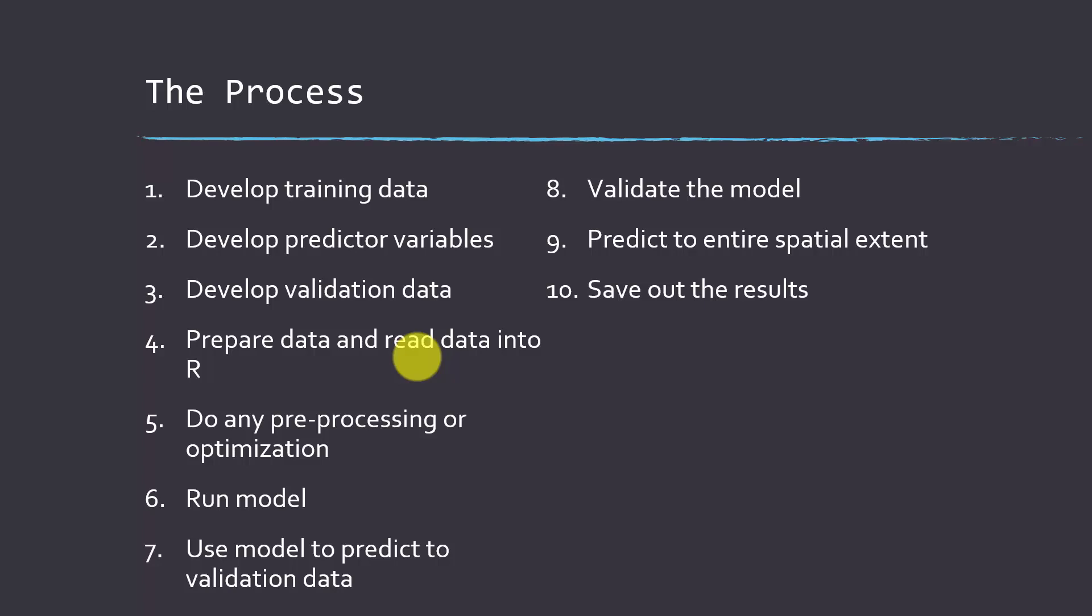Then you can run and create a model, and then you can use that model to predict to some validation data, and then create a validated model. And then you can also predict out to all of your samples, for example, an entire spatial extent, like every polygon or every point or every pixel, whatever your unit is. And then you can save those results and obviously report on them and create an output that people can hopefully use.